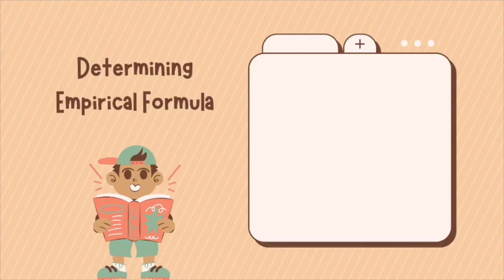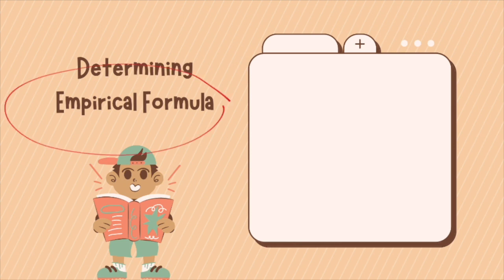Now, how do we determine the empirical formula? Chemists use experimental evidence to determine the identity of compounds they find in nature or produce in a chemical reaction. This type of laboratory analysis allows chemists to analyze the amount in grams of each element present in a compound, and this helps them determine the empirical formula.